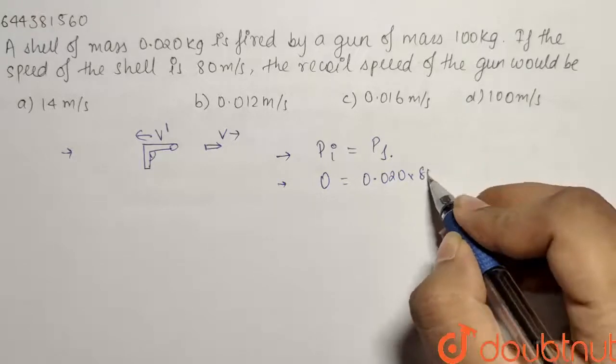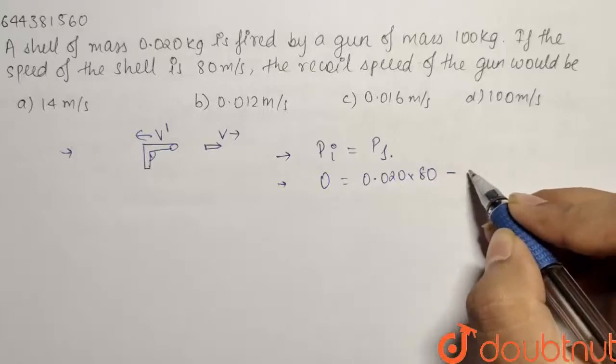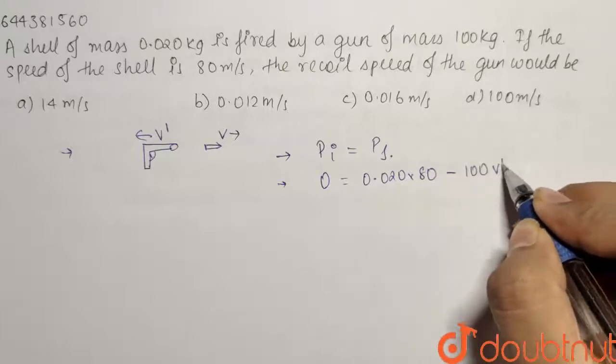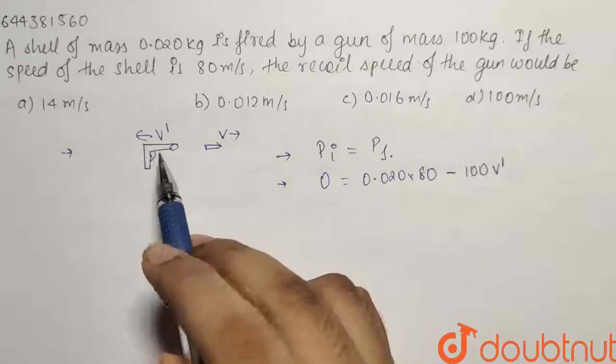So what we will write: multiplied by 80 minus the mass of the gun that is 100 multiplied by V dash. Why minus? Because the V dash is in this direction.